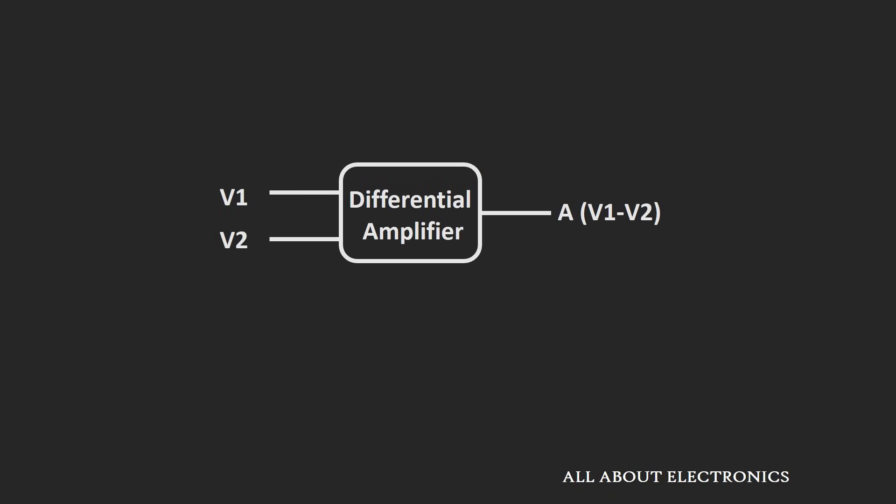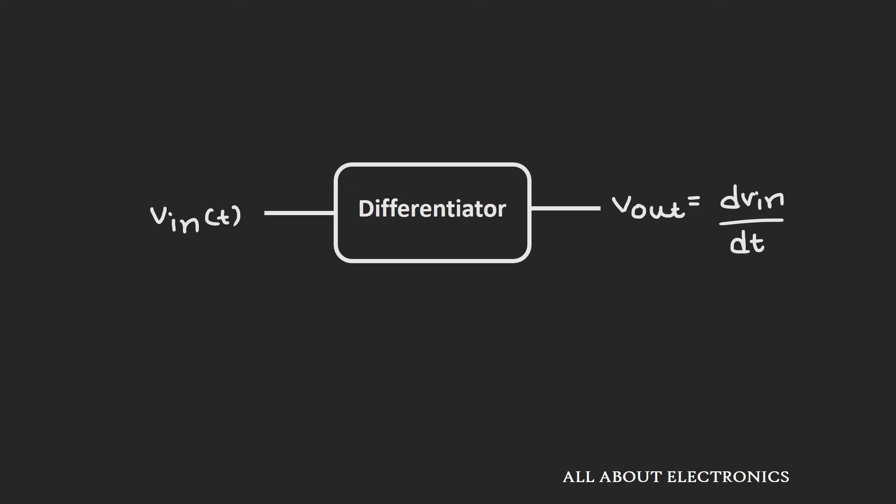Do not get confused between the differential amplifier and the differentiator. The differential amplifier amplifies the difference between two input signals, while in case of the differentiator, the output will be the differentiation of the input signal. Using this differentiator circuit, we can get an idea of the rate at which the input signal is changing.